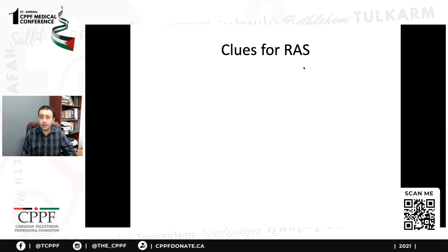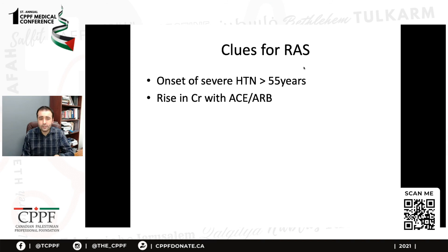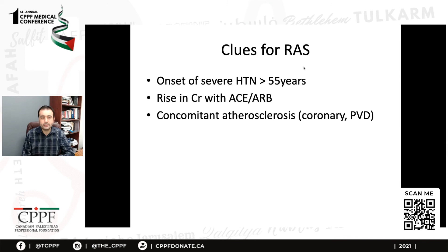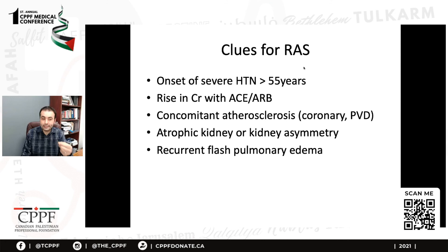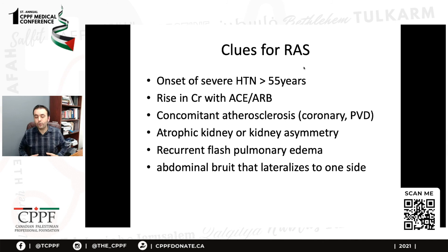Renal artery stenosis is not an uncommon cause. When to think about it: severe-onset hypertension above age 55; a rise in creatinine when you put a patient on an ACE inhibitor or ARB; concomitant atherosclerosis like coronary artery disease or peripheral vascular disease; an atrophic kidney on ultrasound — often a sign that renal artery stenosis completely cut off blood supply and that kidney atrophied; recurrent flash pulmonary edema, which is a classic symptom; and an abdominal bruit on examination, particularly if it lateralizes to one side.